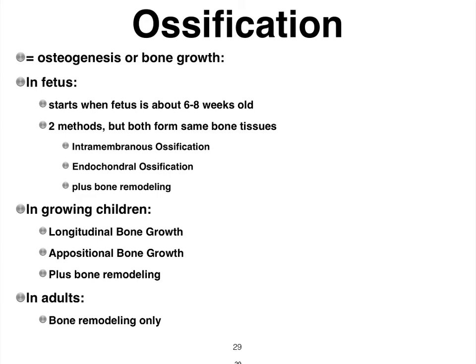Before we delve into that particular form of ossification, I want to call your attention to a few things. Ossification is very often also referred to as osteogenesis. Recall that osteo means bone, and genesis of course means the creation of, the making of, the start of. In some ways we can also call it bone growth, but most of the time when we talk about the development of the skeletal system in the fetus, we tend to use the terms ossification and osteogenesis.